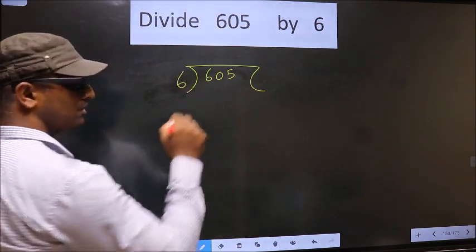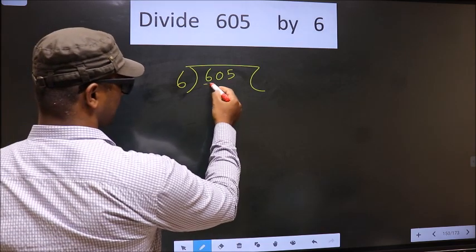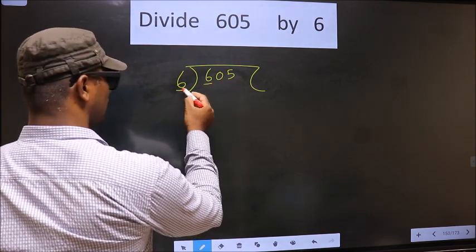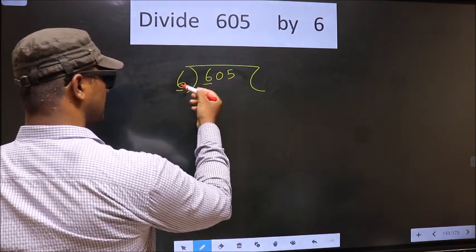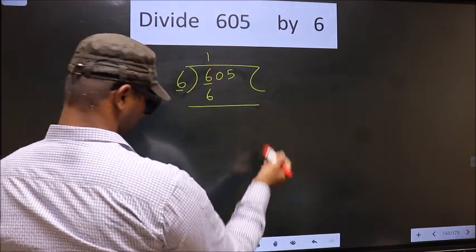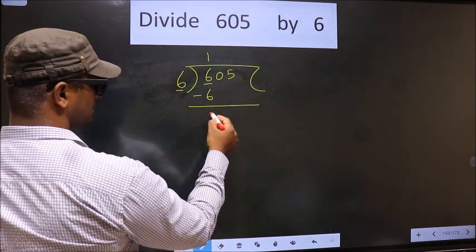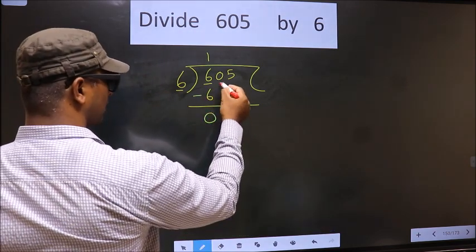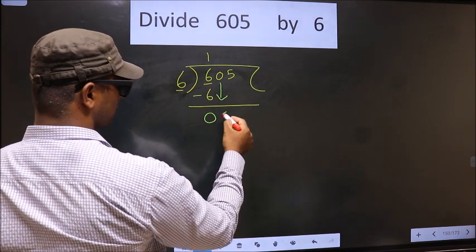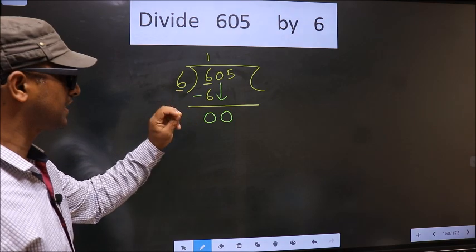6 here. Okay. Next, now here we have 6, here also 6. When do we get 6 in 6 table? 6 once 6. Now you subtract 6 minus 6 equals 0. Now you bring down the beside number, so 0 down. Here we have 0 here, 6.